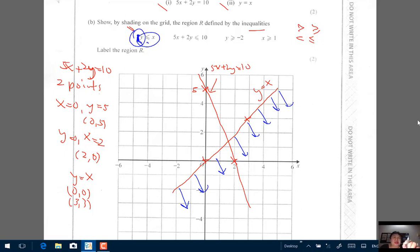Second one, 5x plus 2y is less than or equal to 10. So check your y term. Y term is on the left and has a coefficient 2. So you're looking for less than or equal to 10, so it has to be the area below the line 5x plus 2y less than or equal to 10.